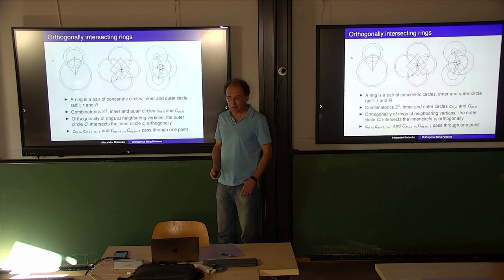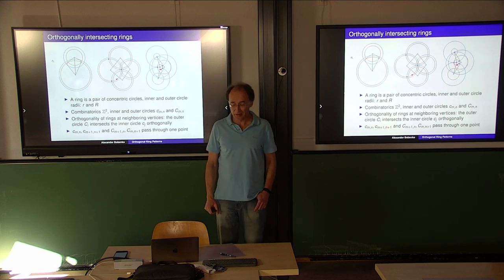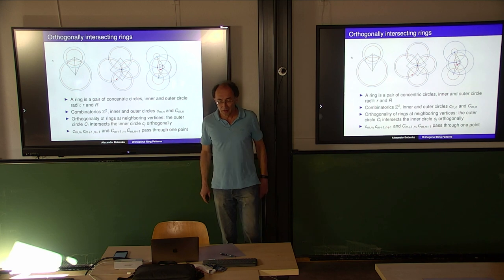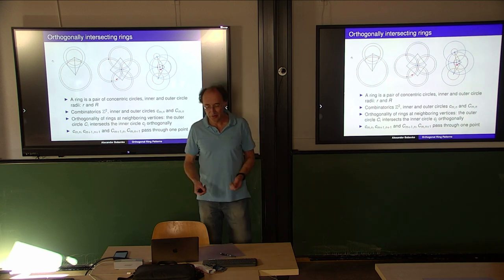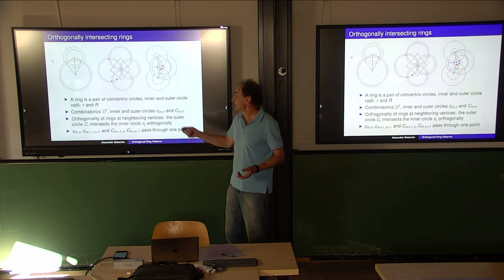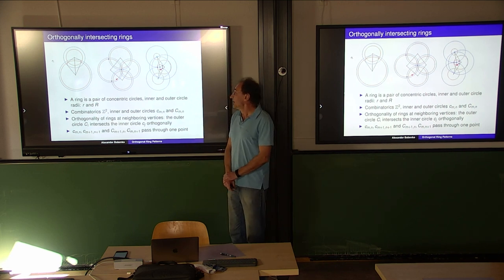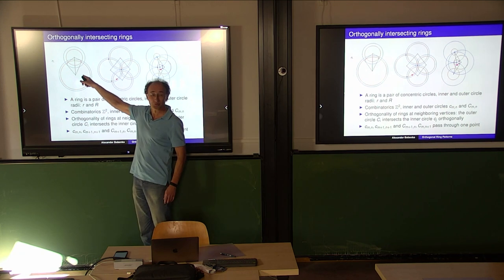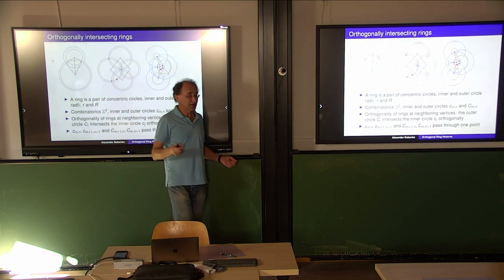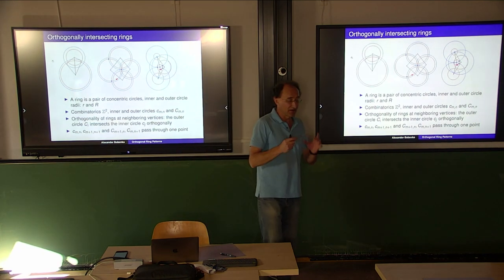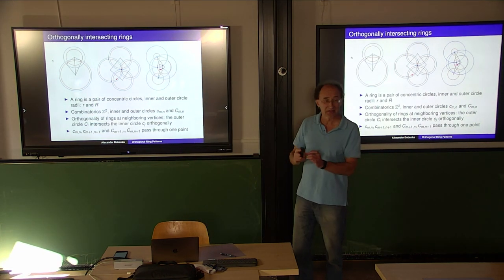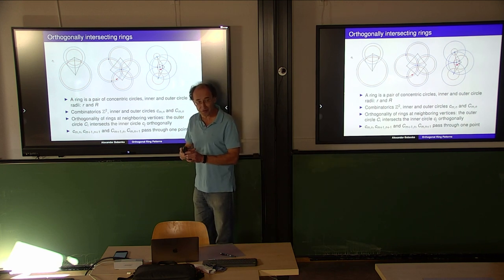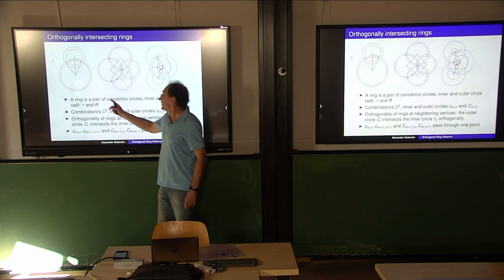What is a ring? A ring is a pair of concentric circles. We are in the plane; we have an inner circle and an outer circle with radii small r and capital R. You build such pictures with two circles. What does it mean that they intersect orthogonally? This means that the inner circle of one ring intersects orthogonally the outer circle of a neighboring ring.